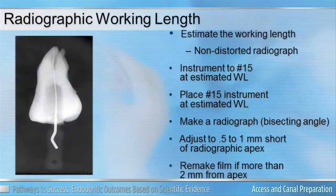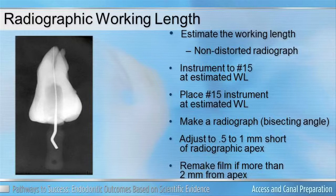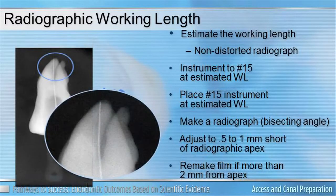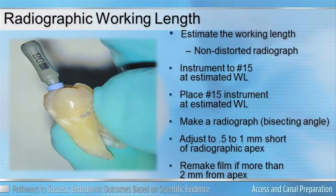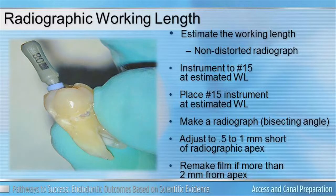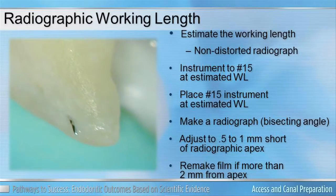When we look at working length using films, we have to remember that it's actually a two-dimensional image while we're trying to determine a three-dimensional point of reference. Even if we have a good reference point, such as a cusp tip modified and cut down for reproducibility, we have to remember that the actual working length may appear on a two-dimensional radiograph to be accurate, but if we were to examine that root end, you may see the end of the file sticking through the root.